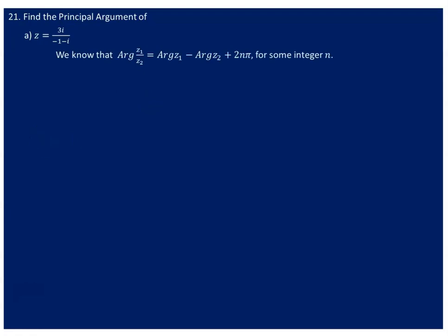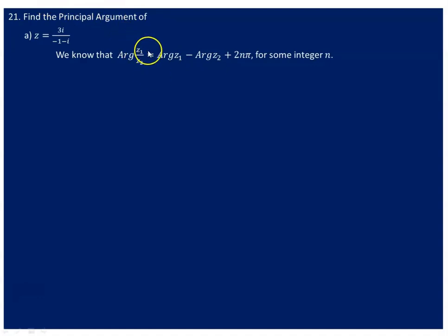In order to find the principal argument of the ratio of two complex numbers, we have to consider these properties. We say that capital A Arg of z1 over z2 is equivalent to capital A Arg of z1 minus capital A Arg of z2 plus 2nπ. I'm saying capital A because there is also small a argument of a complex number. Whenever I say capital A argument, I mean the principal argument. For a given complex number, we do have only one principal argument.